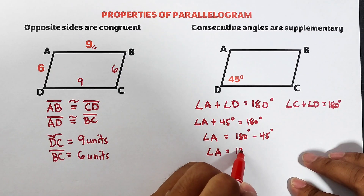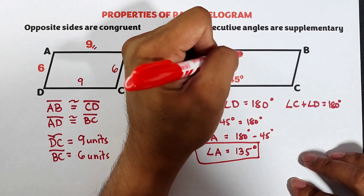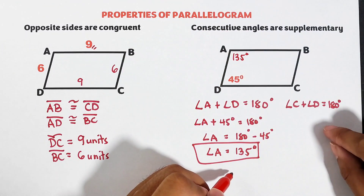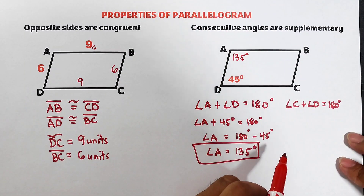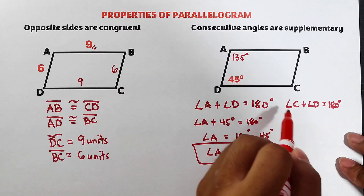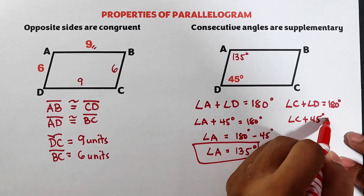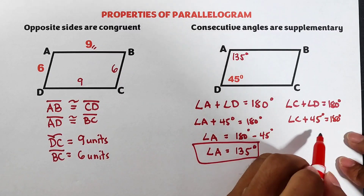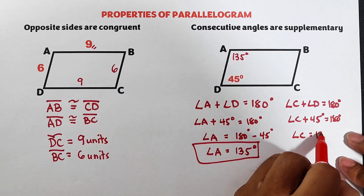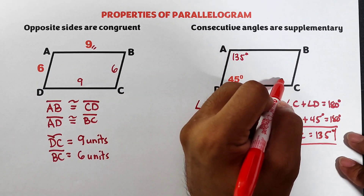Solving this: 180 degrees minus 45 degrees is definitely 135 degrees. So the measurement of angle A is 135 degrees. As for angle C, we have angle C plus 45 degrees is equal to 180 degrees. Using the same solution, angle C is equal to 135 degrees. And these are the answers for the missing angles of this parallelogram.